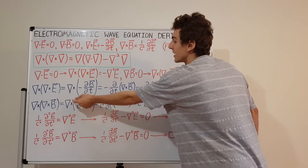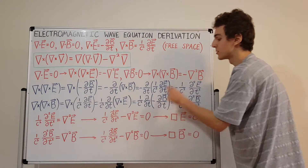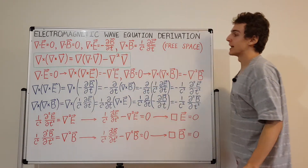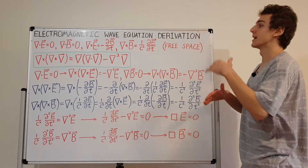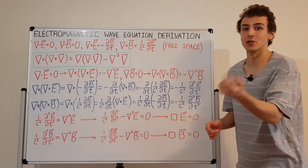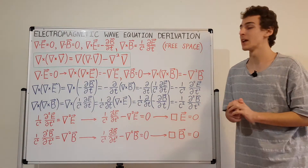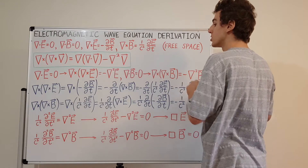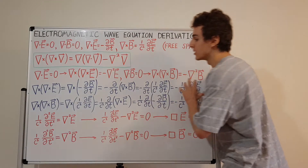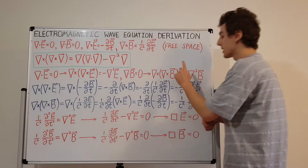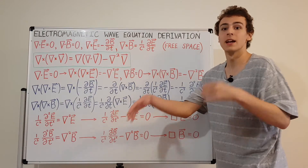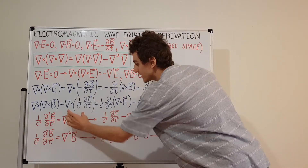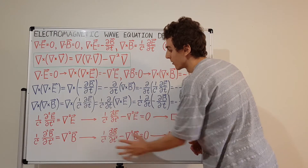Since the negative of something equals the negative of something else, the positive versions are also equal. We move the Laplacians to the left-hand side and we have the standard form of the wave equation for both the electric and the magnetic field. This is the standard wave equation form you may recognize from waves on a string.